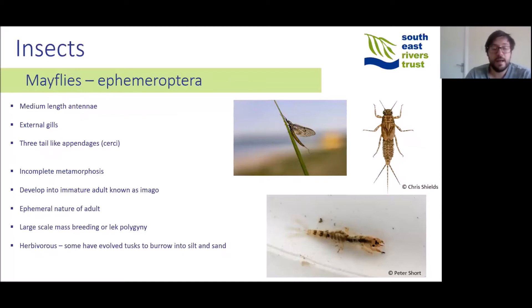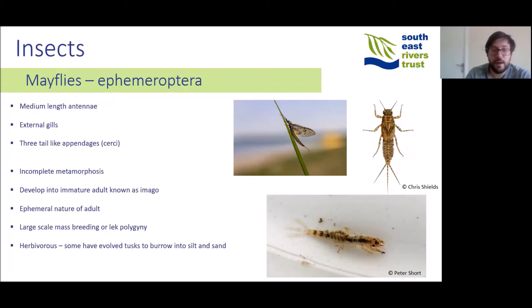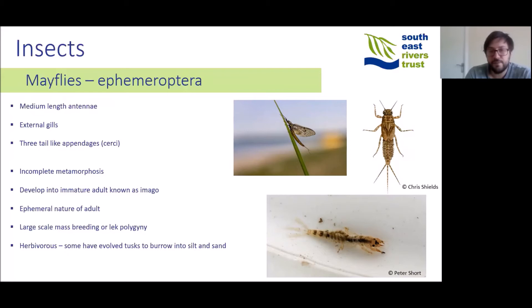Mayfly nymphs have medium-length antennae, external gills, and three tail-like appendages at the end of their abdomen known as cerci. They go through incomplete metamorphosis, with the nymph growing larger over time with a single developing wing bud. When ready to mature, the nymph emerges from the water surface as an immature adult known as a subimago, before a final molt into the full adult. Known as Ephemeroptera due to the ephemeral nature of the adults, they live for a very short time and mate in large swarms through a process known as lek polygyny. They are all herbivorous and some have evolved tusks that allow them to burrow into silt and sand.